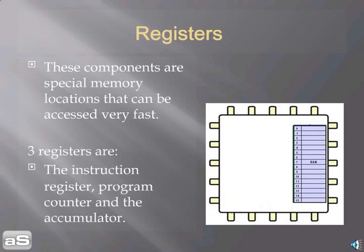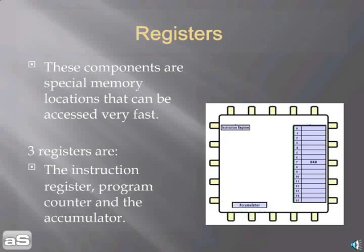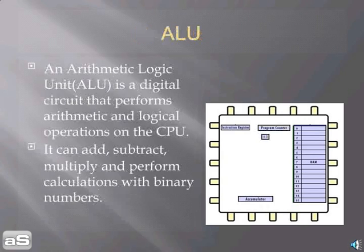Registers are special memory locations that can be accessed very fast. Three registers are: the Instruction Register, Program Counter, and the Accumulator.